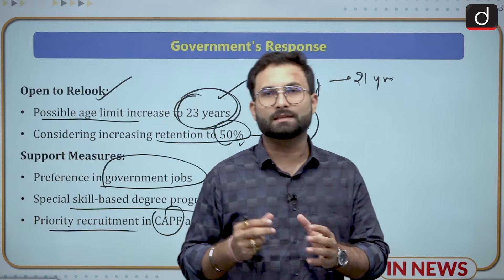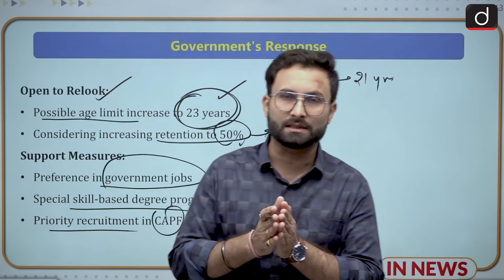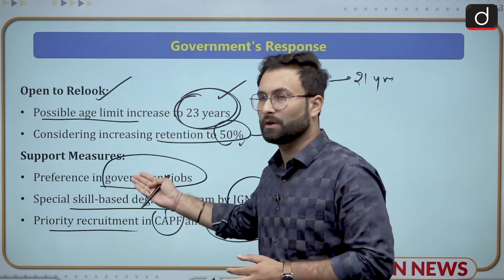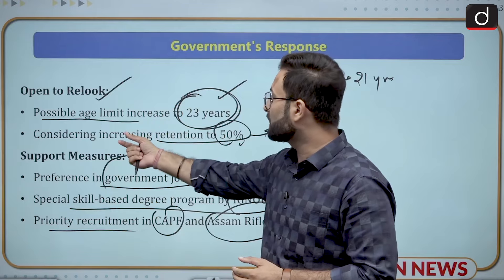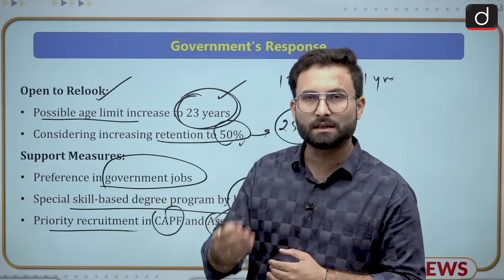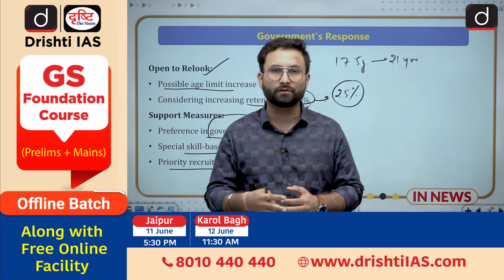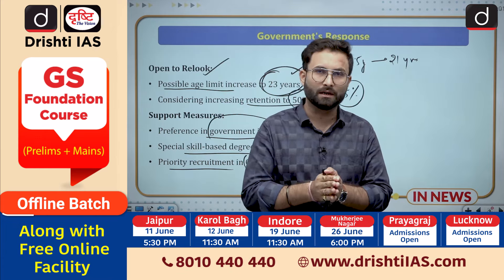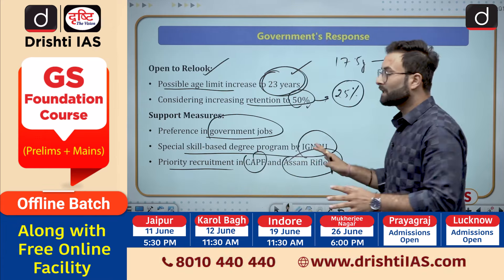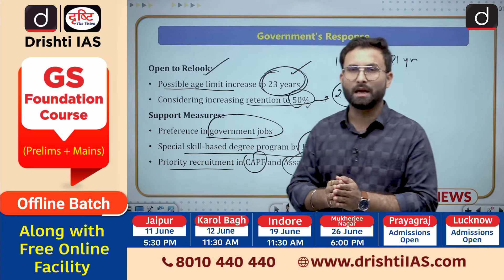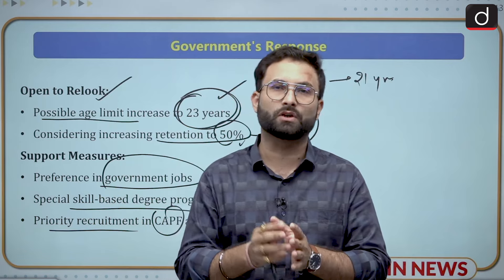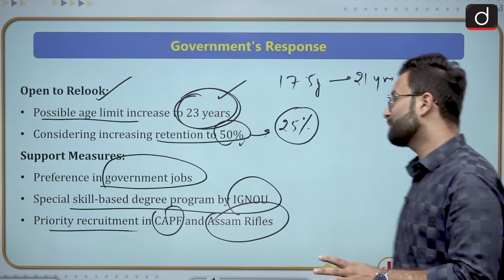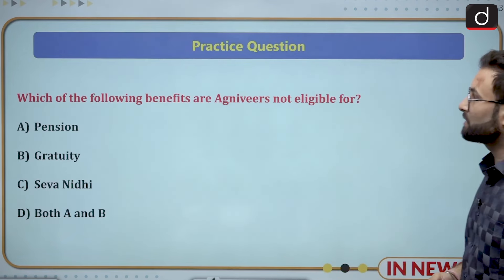So, the Agniveer scheme has certain issues and certain ways forward — increasing the age limit and increasing the retention percentage are among the key considerations. That covers the aims, contentions, and way forward for the Agniveer scheme. Now coming to the last part — the prelims practice question.